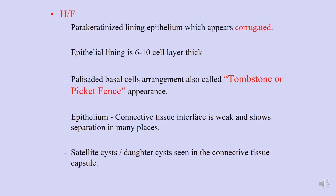To reach a confirmatory diagnosis, a biopsy is performed. The microscopic findings of OKC are very characteristic. Histopathologically, we see a parakeratinized lining epithelium with a corrugated surface. This lining epithelium is approximately six to ten cell layers thick. We also see palisading basal cell arrangement, also called the tombstone or picket fence appearance, where the basal cells are arranged in a parallel fashion.